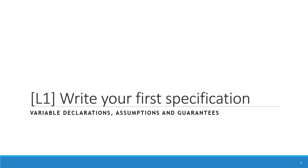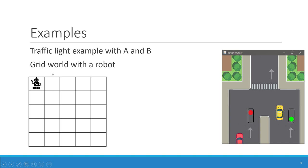Welcome to the first module of this tutorial. First we will learn how to write our first specification. We will look at variable declarations, assumptions and guarantees. The examples we are going to follow are a traffic light example and a grid world with a robot moving between grids.